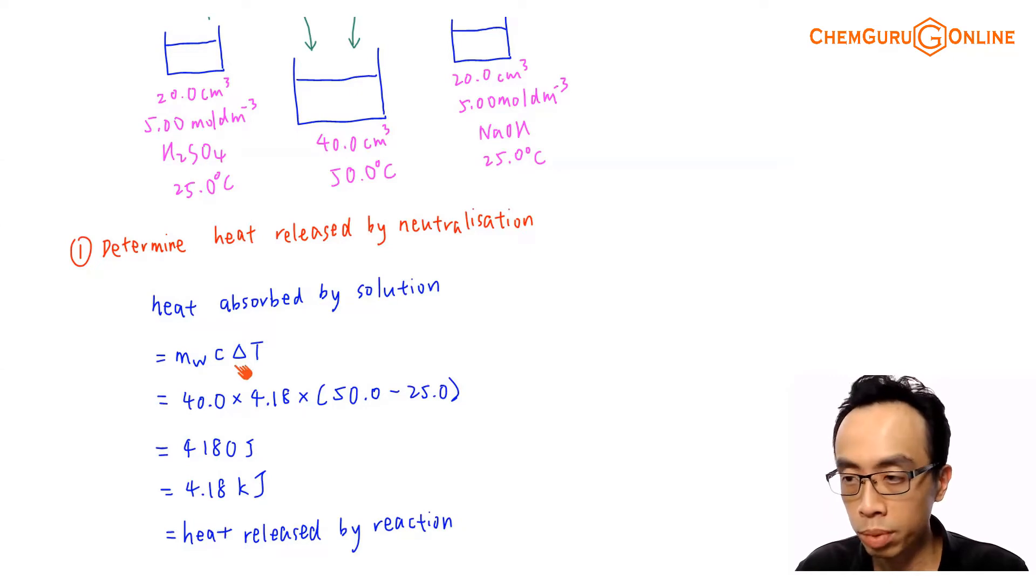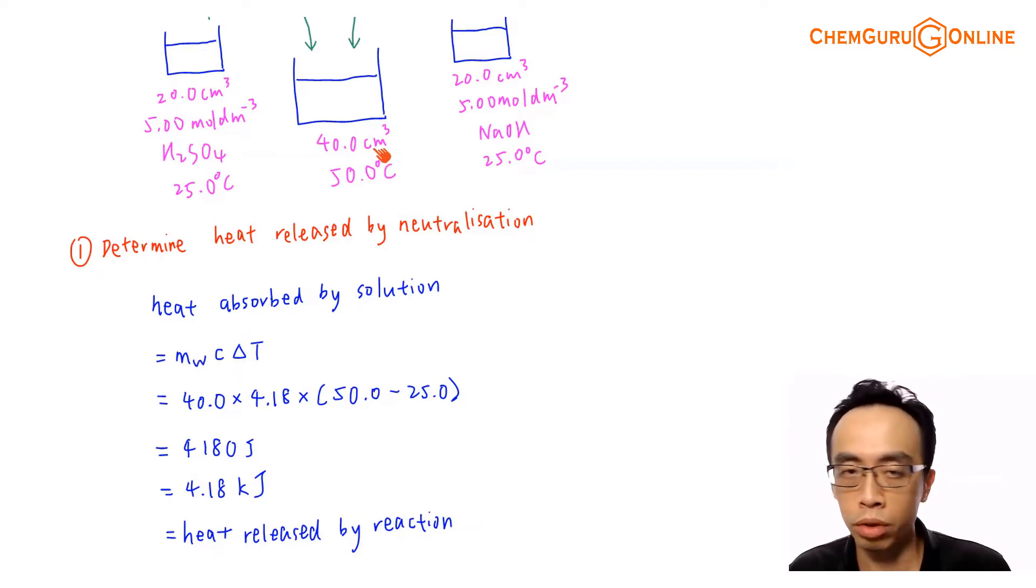So personally, I like to remember this as M subscript W. That means this is the mass of water. Multiply by C, which is the specific heat capacity for water. Multiply by change in temperature for water. So mass of water will be 40.0 gram because the question already gave me density is 1 gram per cm³. So 40.0 cm³ is equivalent to 40.0 gram. So mass is 40.0. Specific heat capacity is 4.18. This information is in a data booklet. We can refer to that.